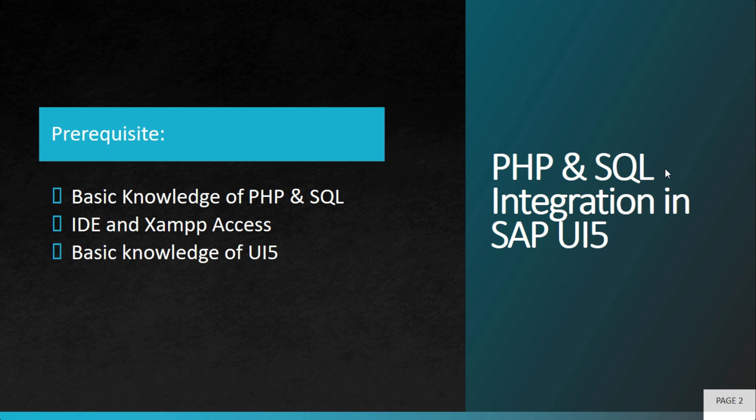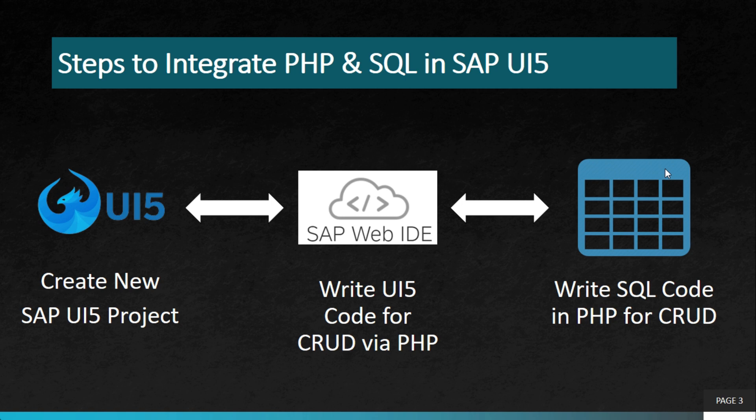You need to have XAMPP access because we will be running a server on our local machine, via which we will be running PHP as well as SQL. Later on, we'll also be deploying our application within XAMPP and we can run our UI5 application locally without needing internet. You'll also need a basic knowledge of SAPUI5.